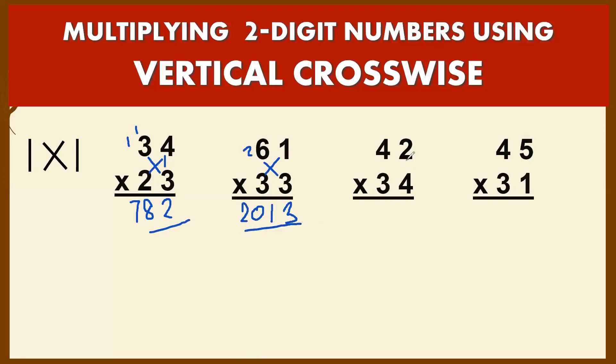For our third example, you have 42 times 34. 2 times 4 is 8. Crosswise, we have 4 times 4 is 16, then 2 times 3 is 6. 16 plus 6 is 22. So you bring down 2 and carry 2. 4 times 3 is 12, plus 2 gives you 14. So your answer is 1428.